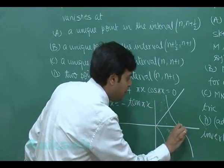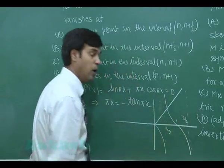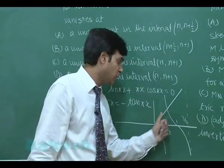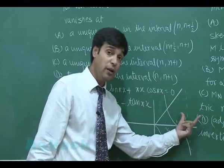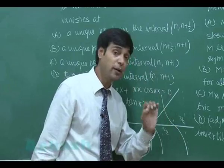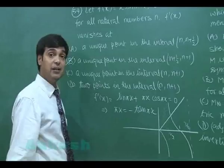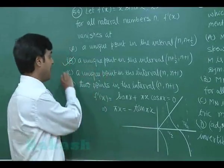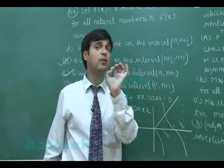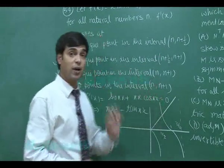From the graph, there is exactly one solution in the interval (n+½, n+1) and exactly one solution in the interval (n, n+1) for each particular value of n. Different values of n give different unique solutions in these intervals. The correct answers are B and C.